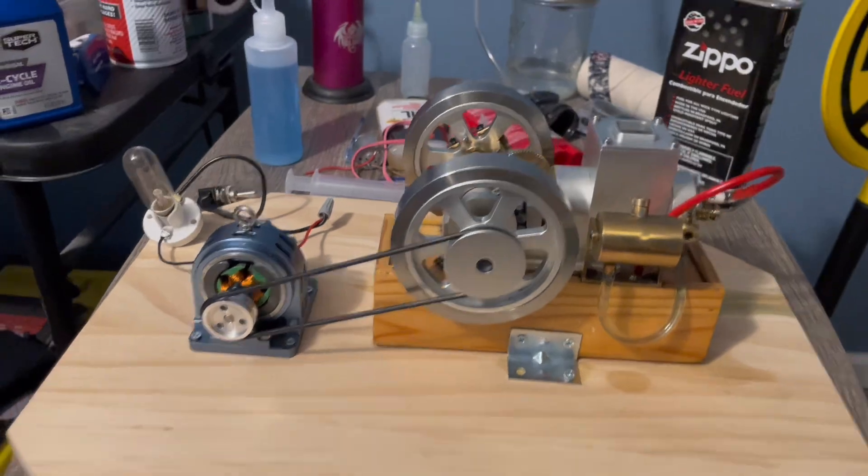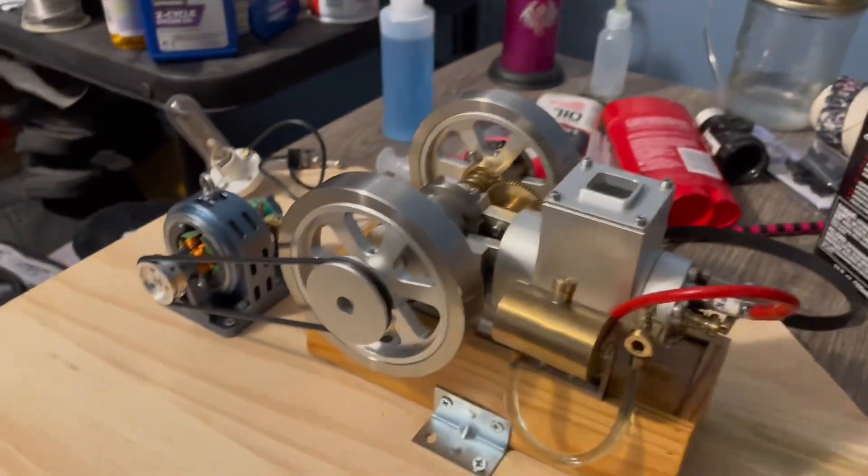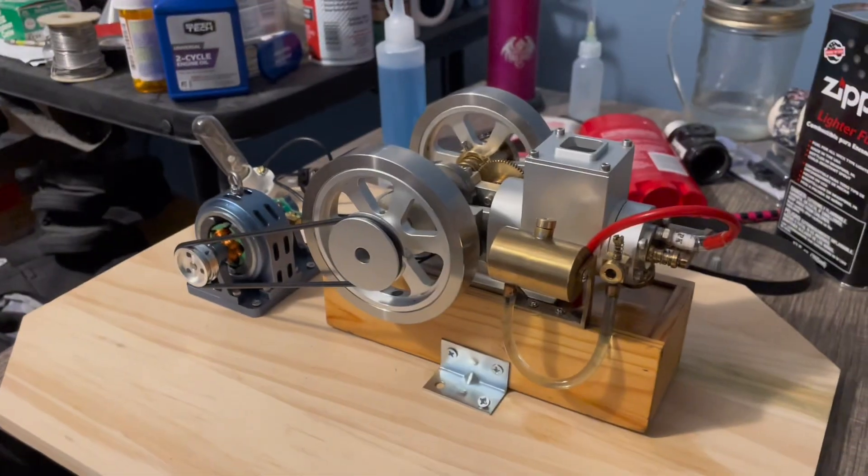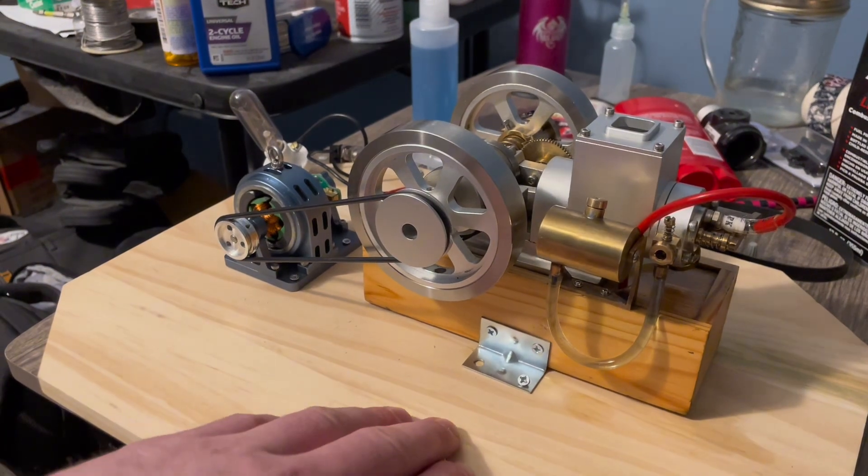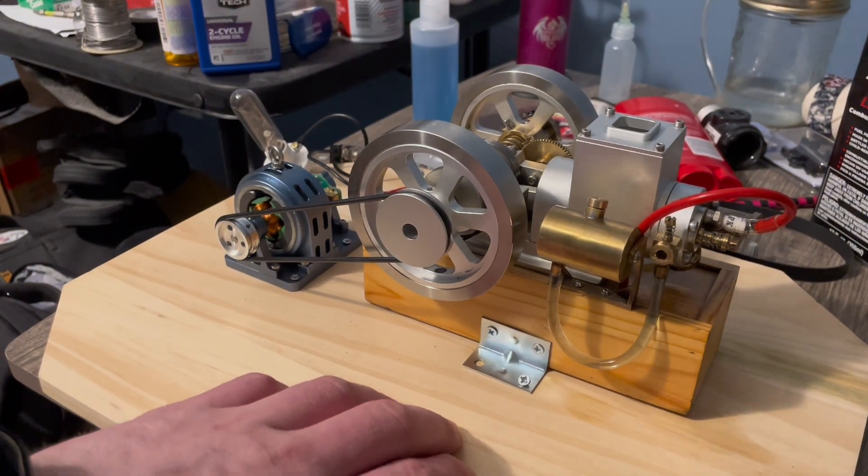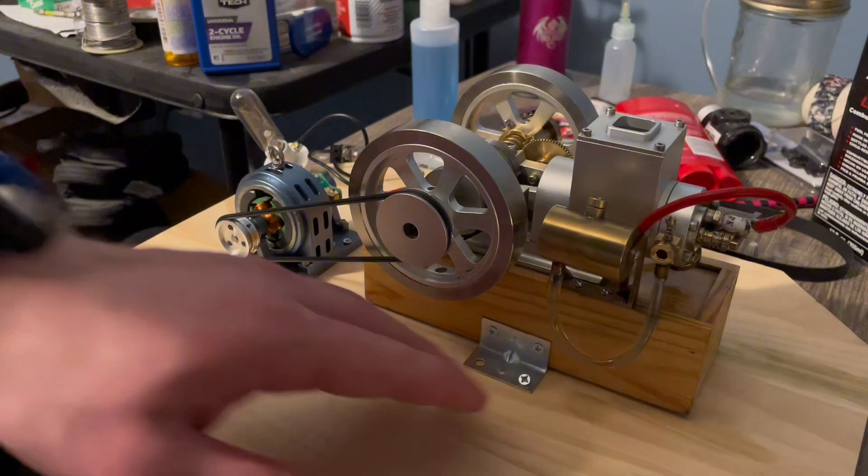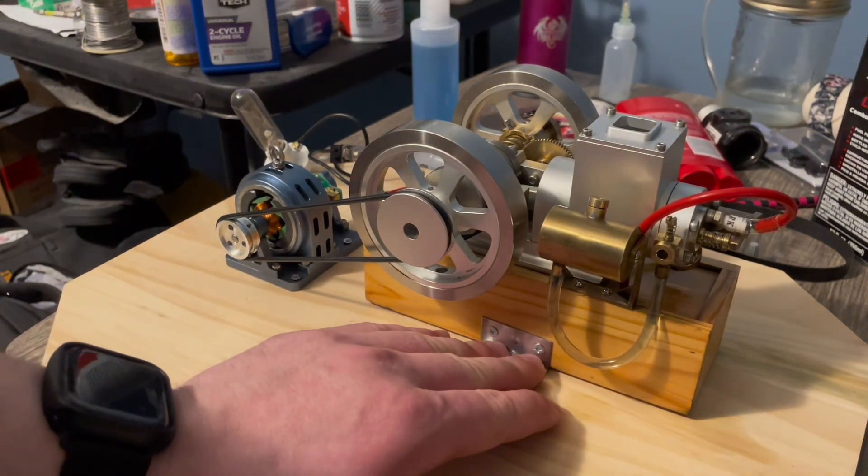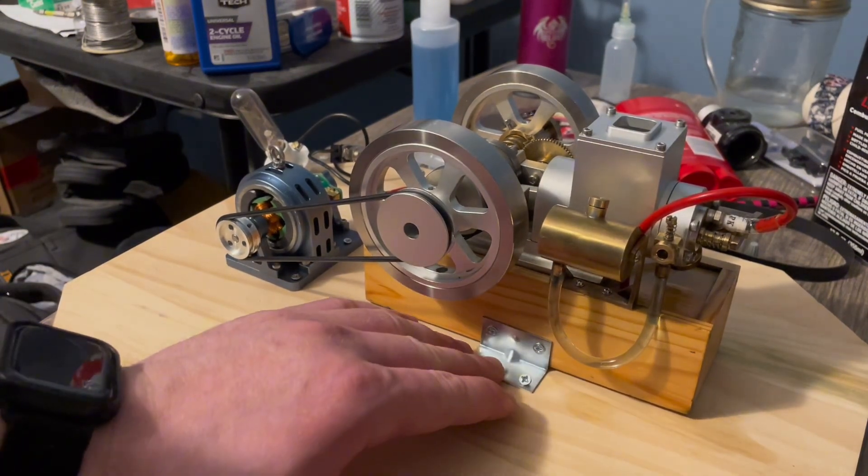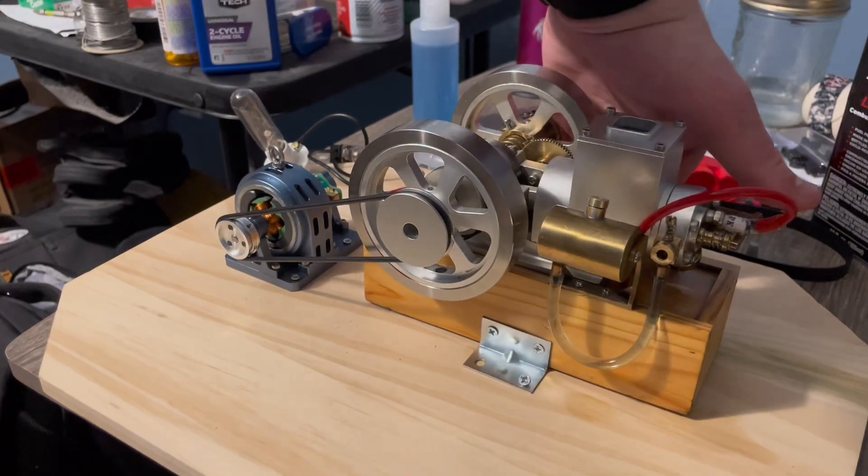I didn't mean to jolt the camera, I was going to move it anyway. I bought this plinth from Walmart actually, I didn't make it so I can't take credit for it. I secured the hit-and-miss engine with L brackets and screws on either side, here and here.